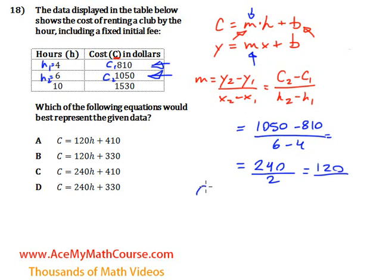So we have c is equal to 120h plus b. We don't know b yet, which is the y-intercept, but we can easily find it out by just using 4 for h and 810 for c. So let's plug them in. First I'll just copy down the 120 and the b. So c is 810, h is 4.